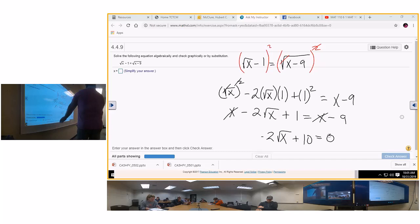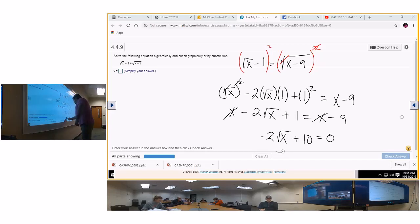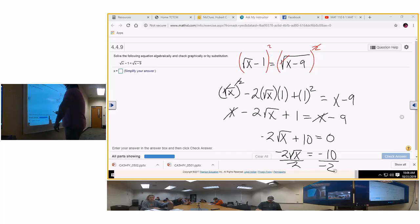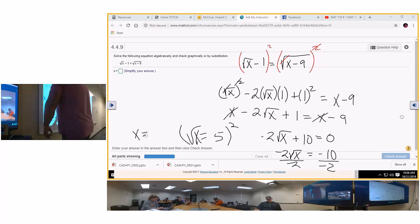Or you can bring the 10 over to negative 2 square root of x equals negative 10 divided by negative 2. Square root of x is equal to 5. And then what do you do to undo the square root? You square both sides and that's going to give you x is equal to 25.